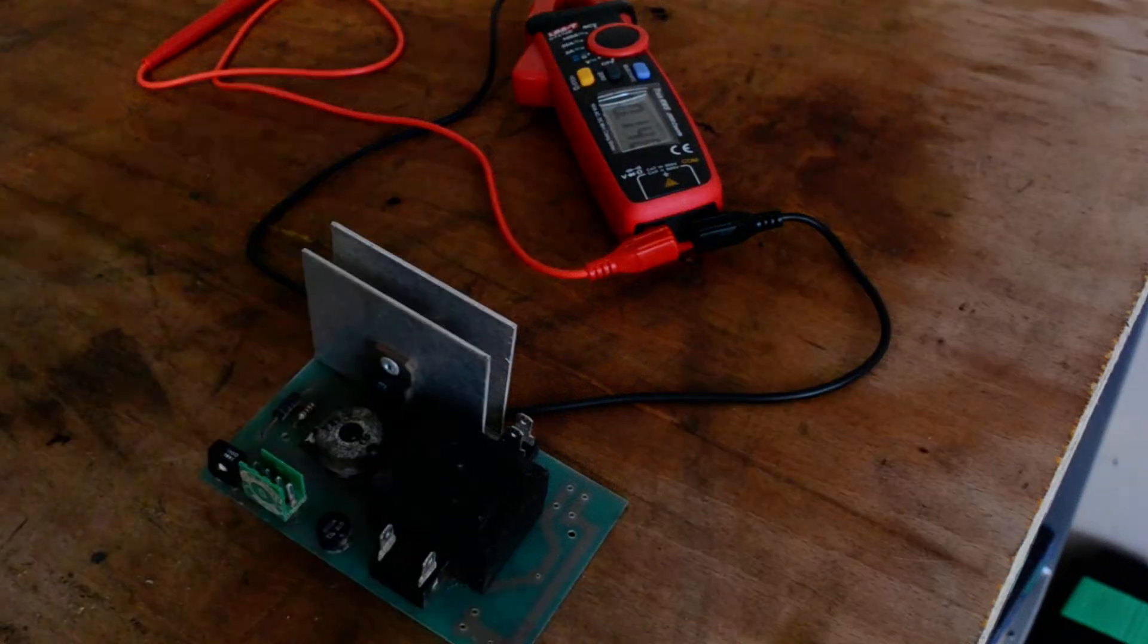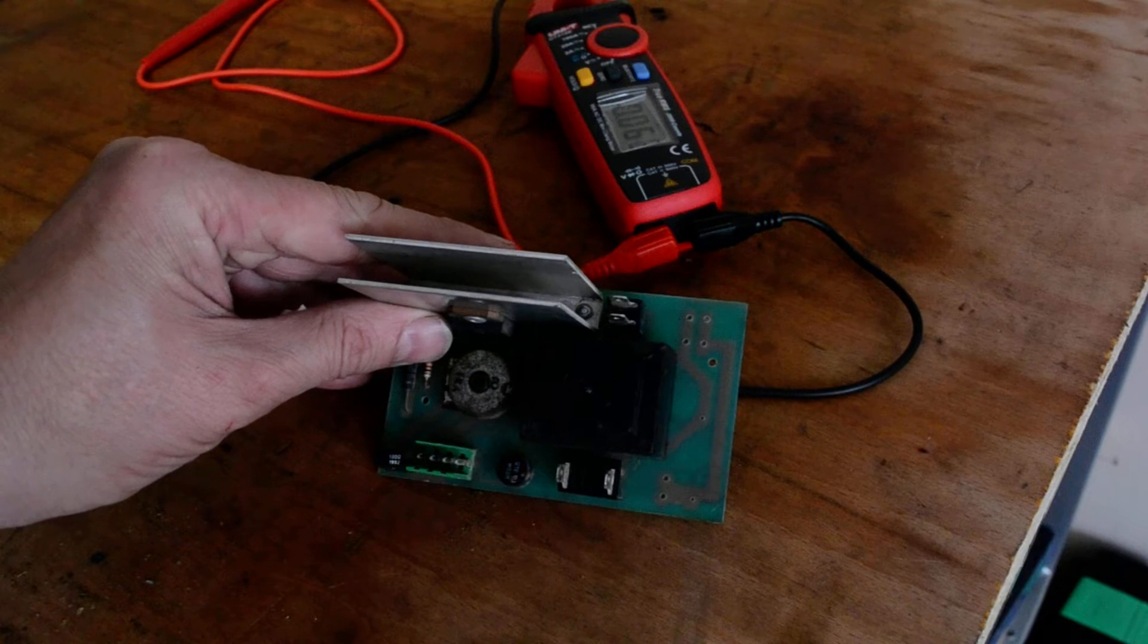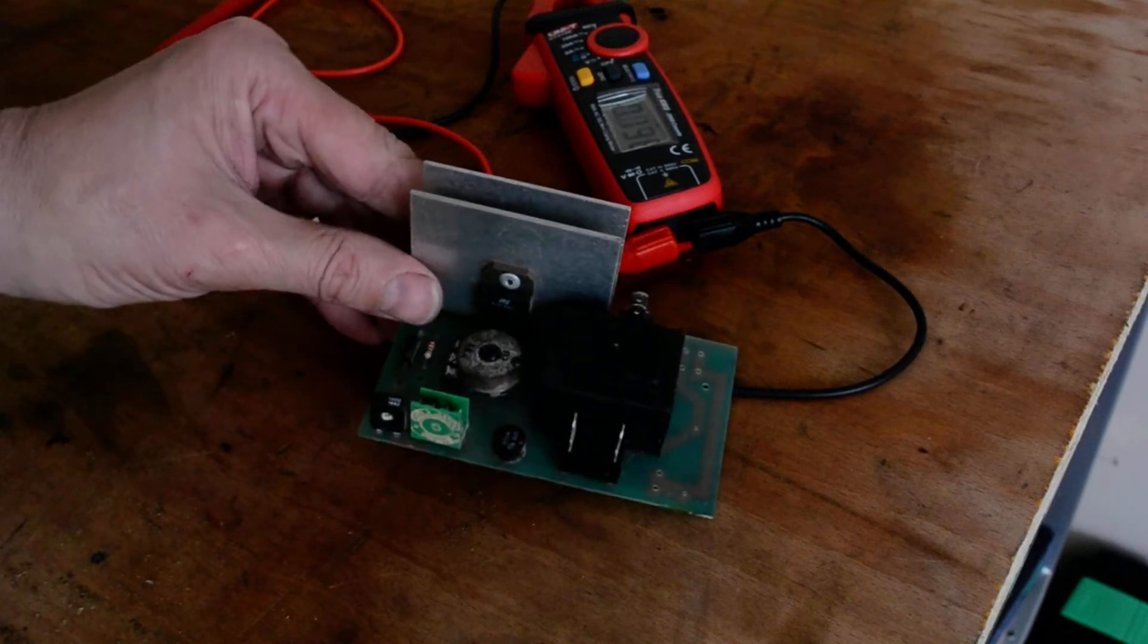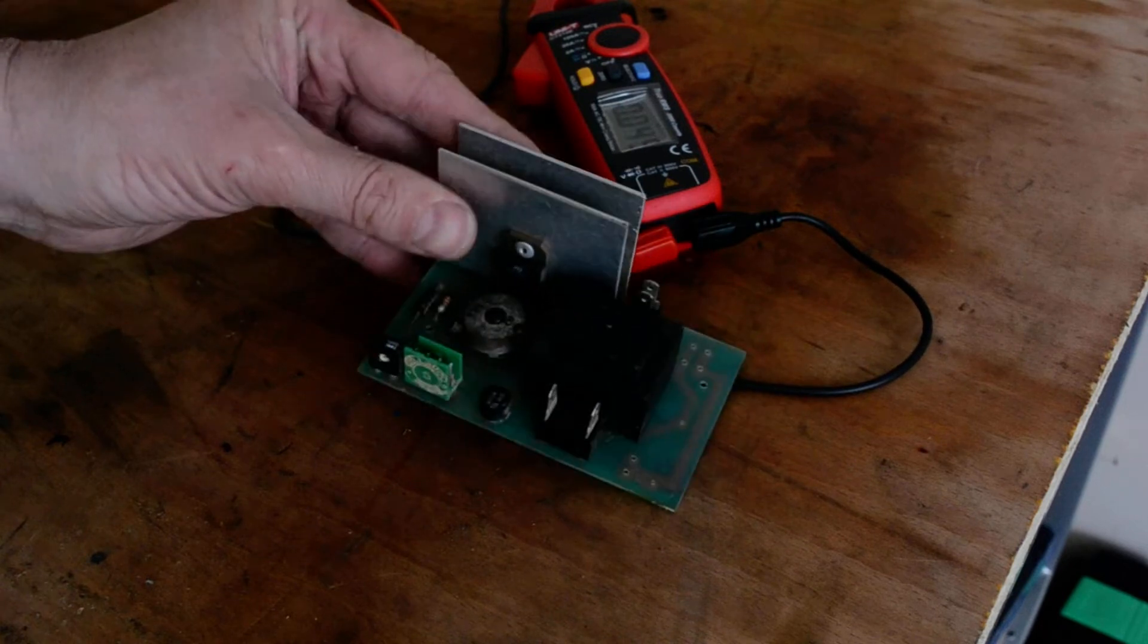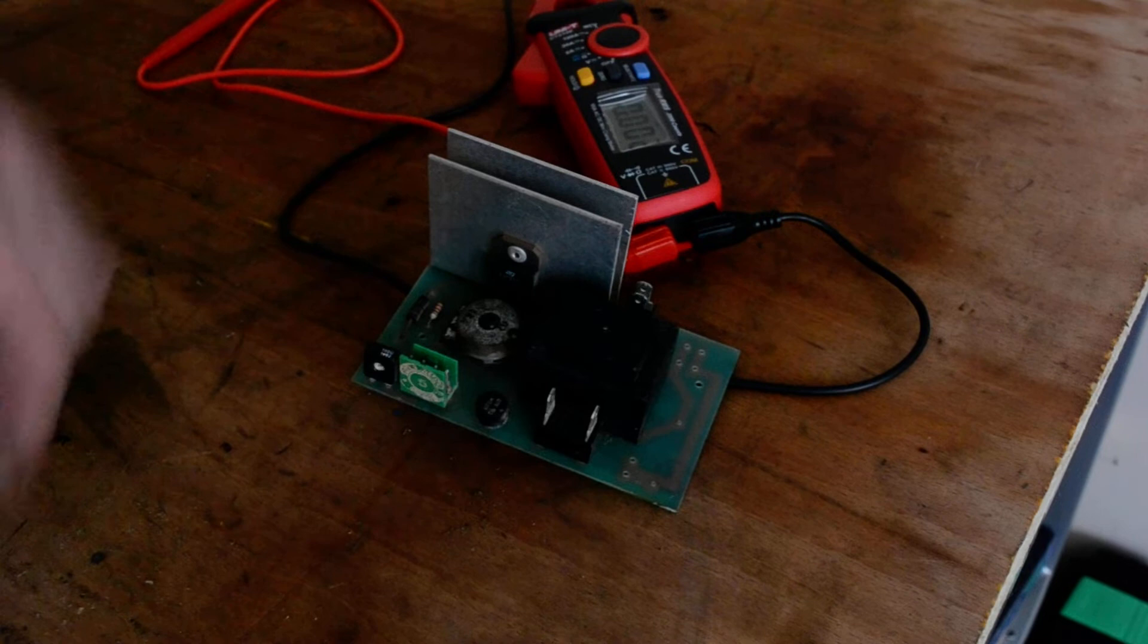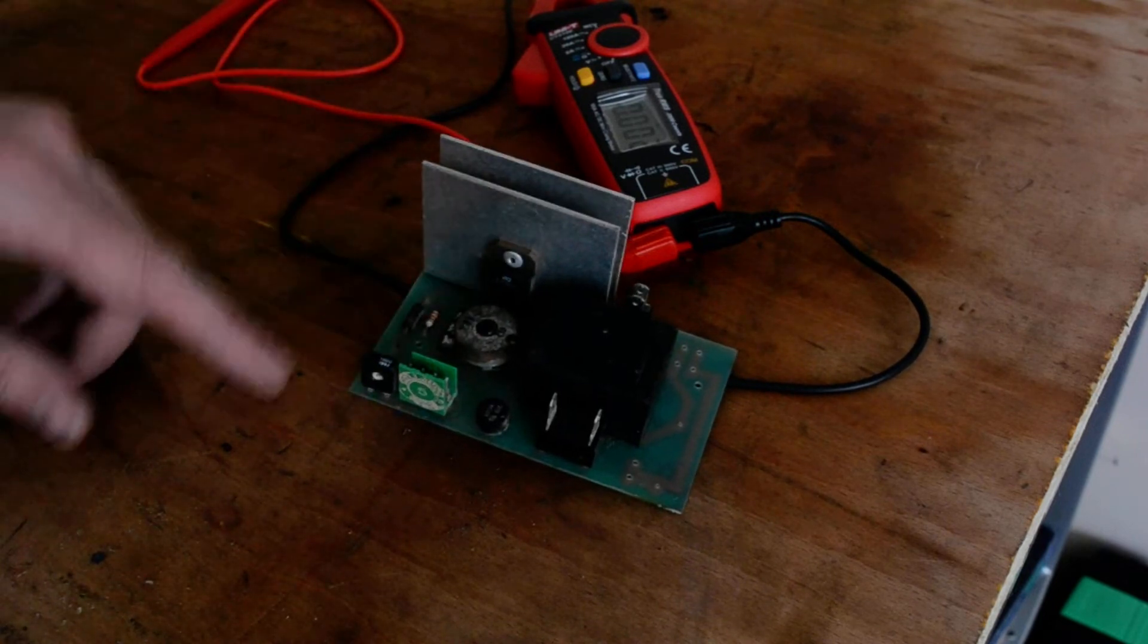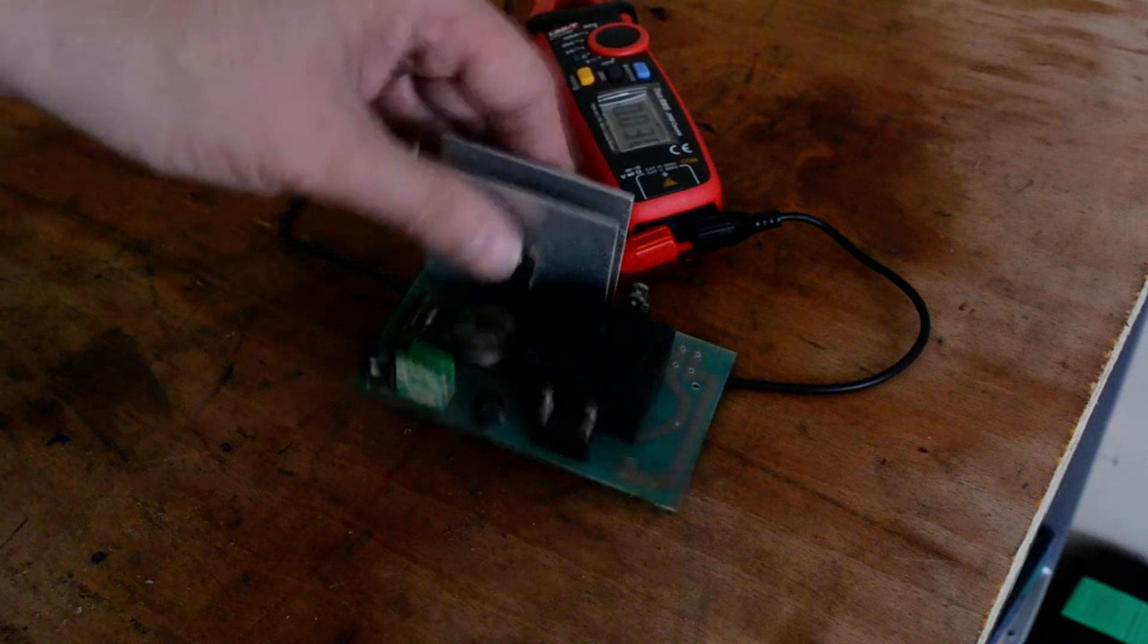Okay, so we've got this small welder PCB. Not much on it - the potentiometer, your outputs, your inputs, transistor, the diode and rectifier. So really easy to test. Nothing on the other side.